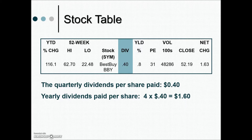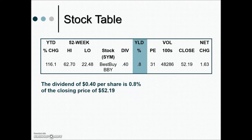That means for every share of stock owned, the owner would receive $1.60 in profits or dividends annually — multiplying the 40-cent quarterly dividend by four. This would be reportable income for tax purposes. The yield shown is eight-tenths of a percent, based on the closing price of $52.19.